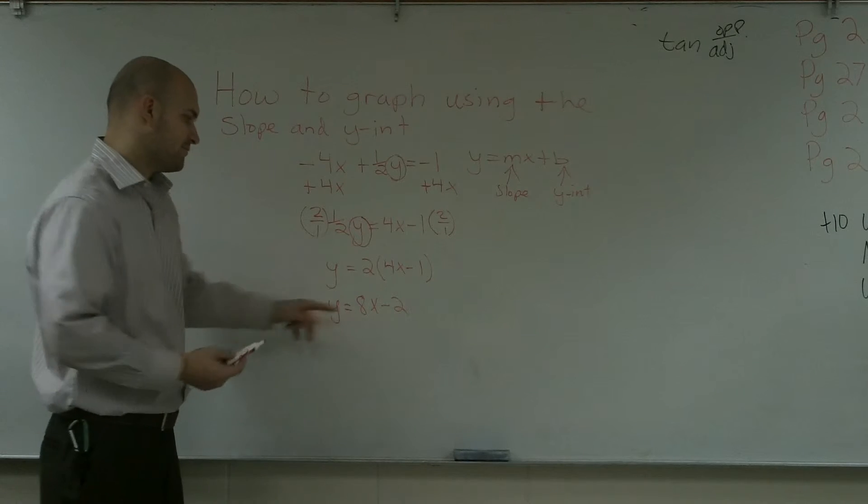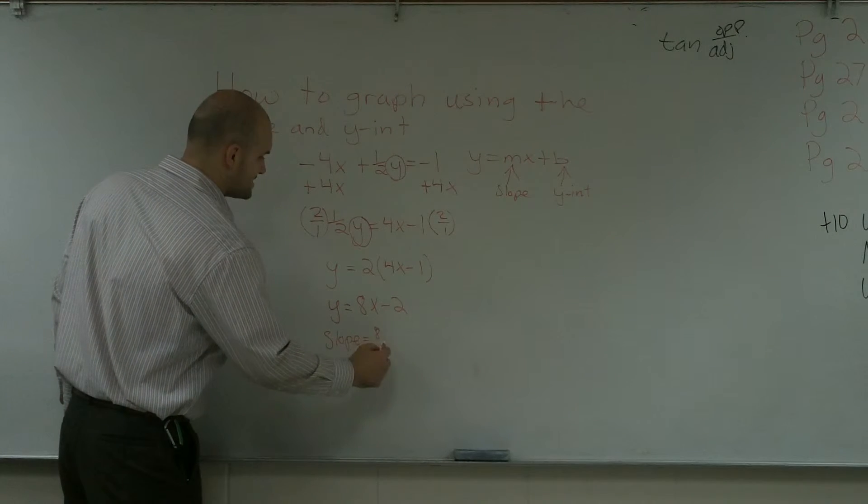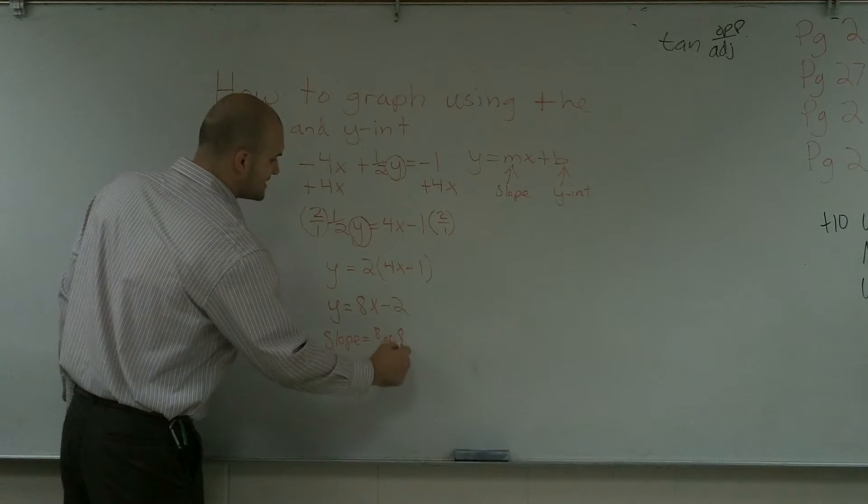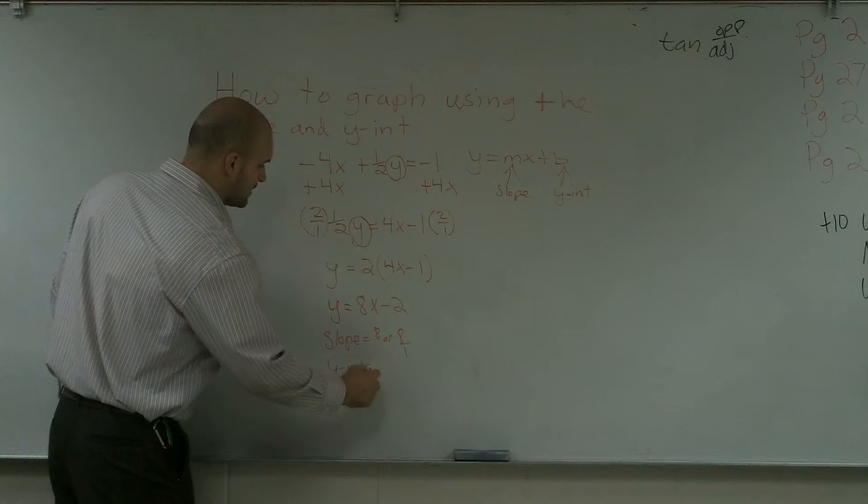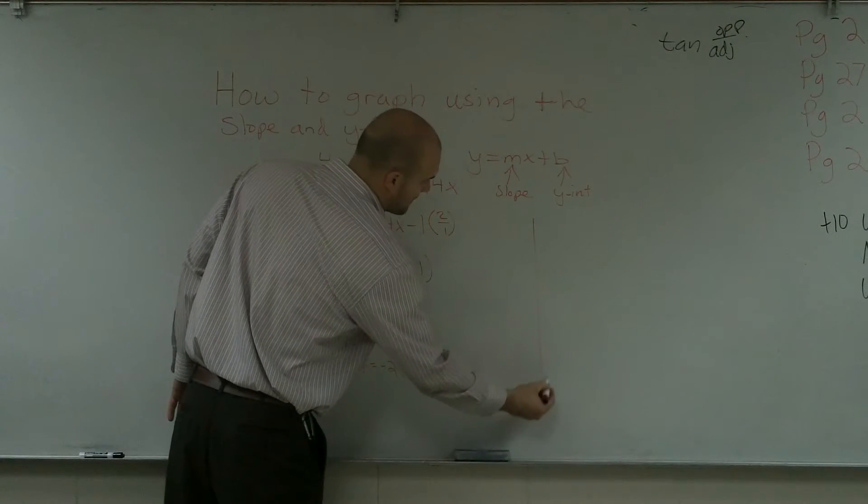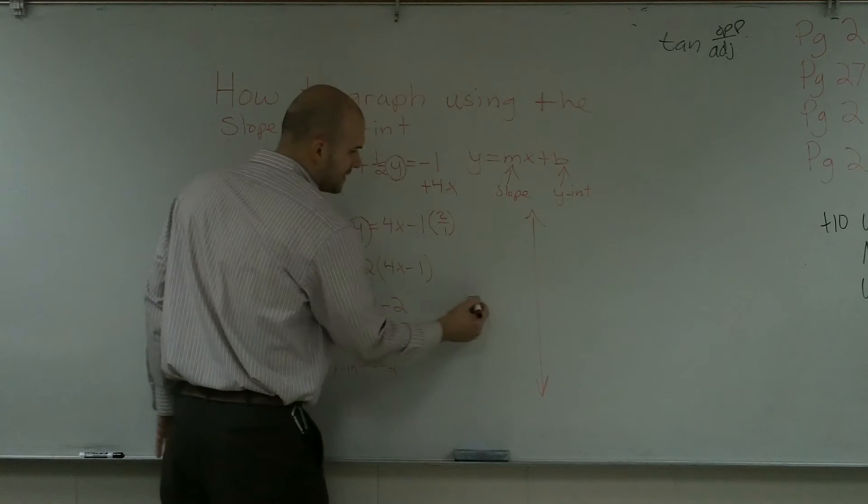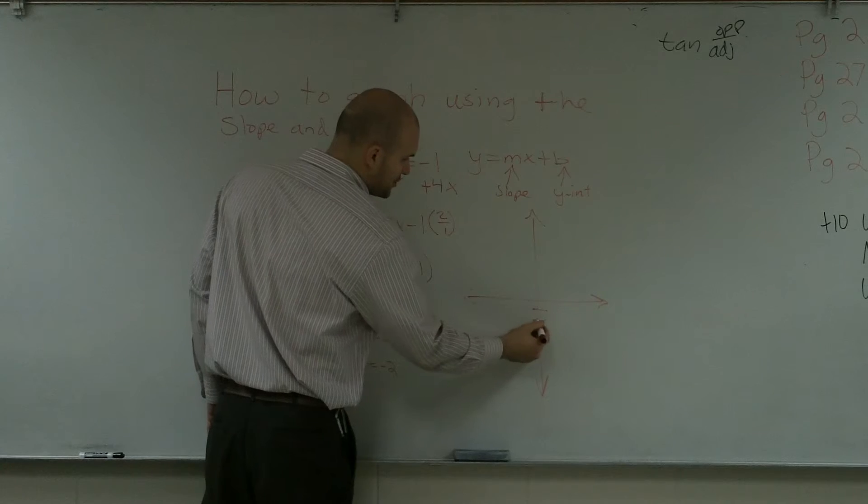Now, to put this in slope-intercept form, I know my slope is going to equal 8, or we can write it as 8 over 1. And my y-intercept is going to equal a negative 2. So if I wanted to quickly graph this, I go to my y-intercept, which is a negative 2.